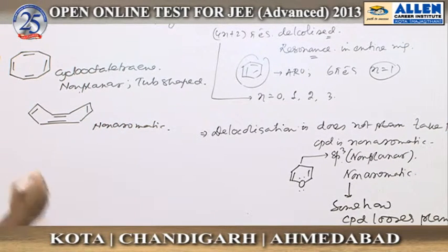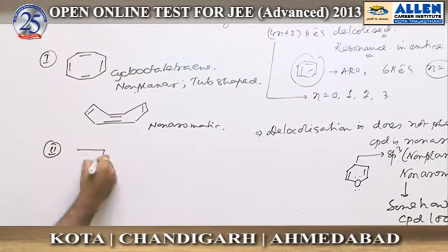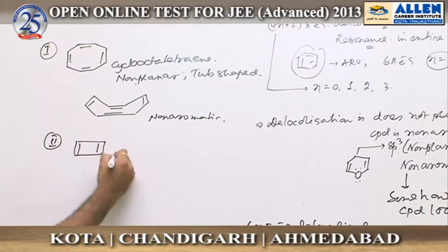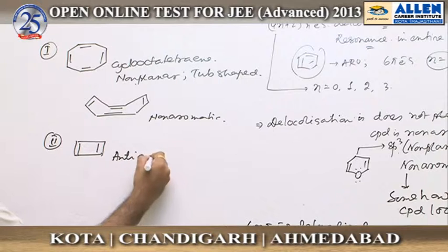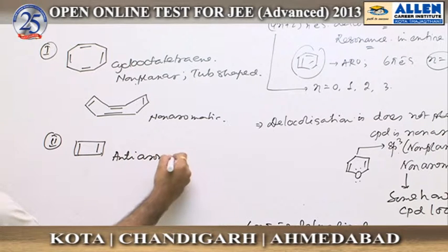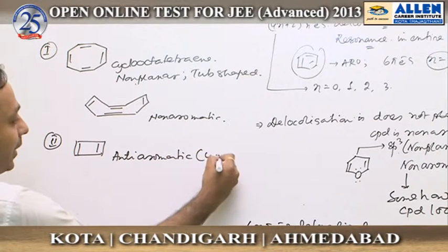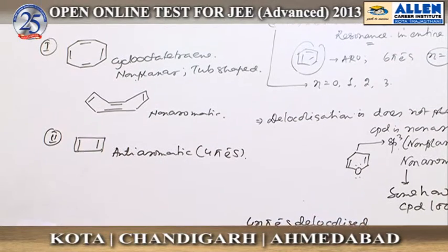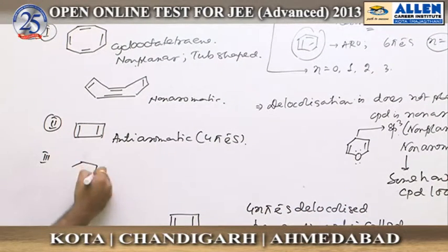The second compound is anti-aromatic, as already discussed, because it has four pi electrons that are delocalized. The third compound has ten pi electrons and they are delocalized, with n equal to two, satisfying all conditions of aromaticity — so compound three is aromatic.